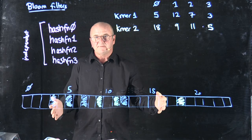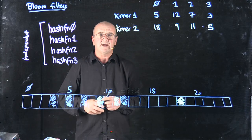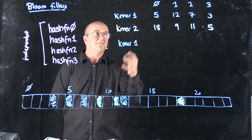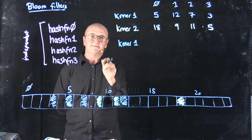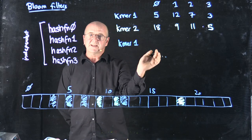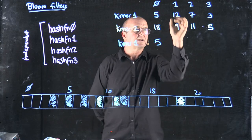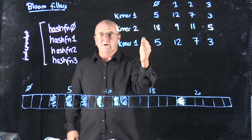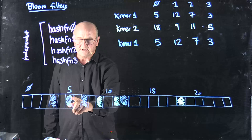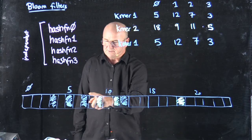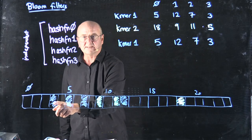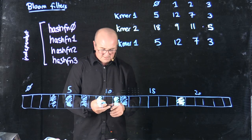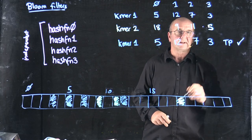Now that I've set my bloom filter, I can come back and query it. Let's say I come back with KMA 1 and I want to know, have I seen KMA 1 already? So I run it through my same hash functions. Remember that for a hash function, if you pass the same string, you should get the same answer back in the same running of the code. So for each of my four hash functions I get the same answers. I say, is 5 true? Yes. Is 12 true? Yes. Is 7 true? Yes. Is 3 true? Yes. If all of the bits are true, then I've seen that KMA. So I've got a true positive, and I say yes, I've seen it.